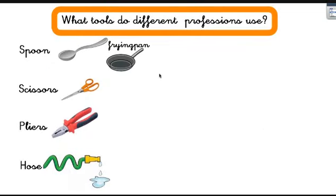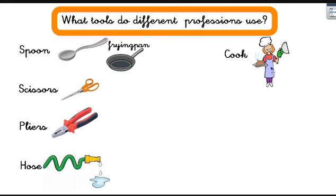Another question we could ask ourselves is: what tools do different professions use? For example, do you think a teacher needs a spoon or frying pan to teach in class? Or maybe a firefighter uses a spoon or frying pan to put out fires? No. So who uses spoons and frying pans? Easy — the cook, of course.